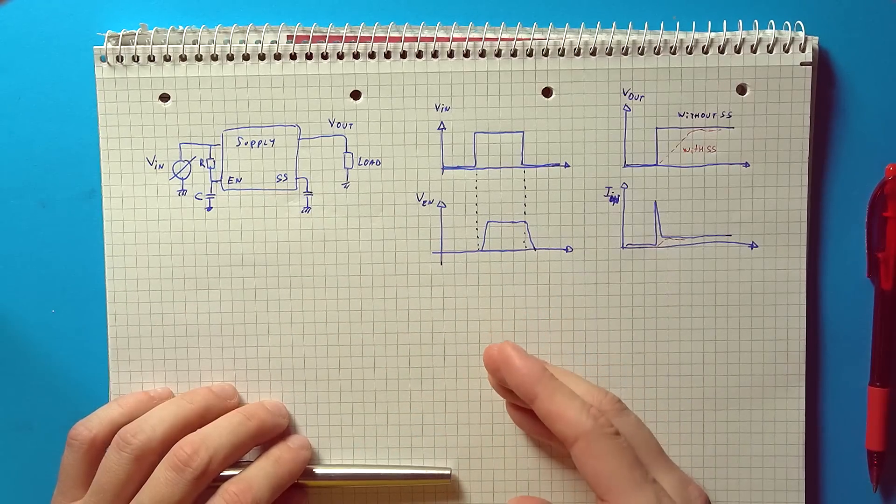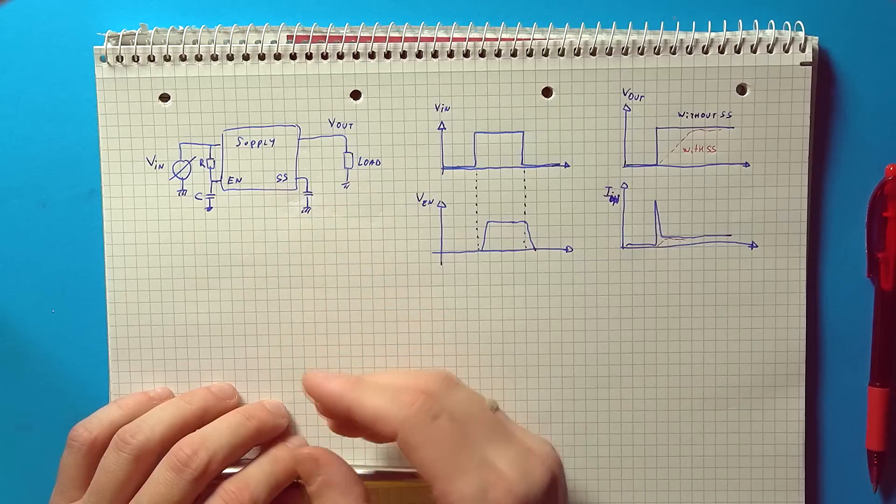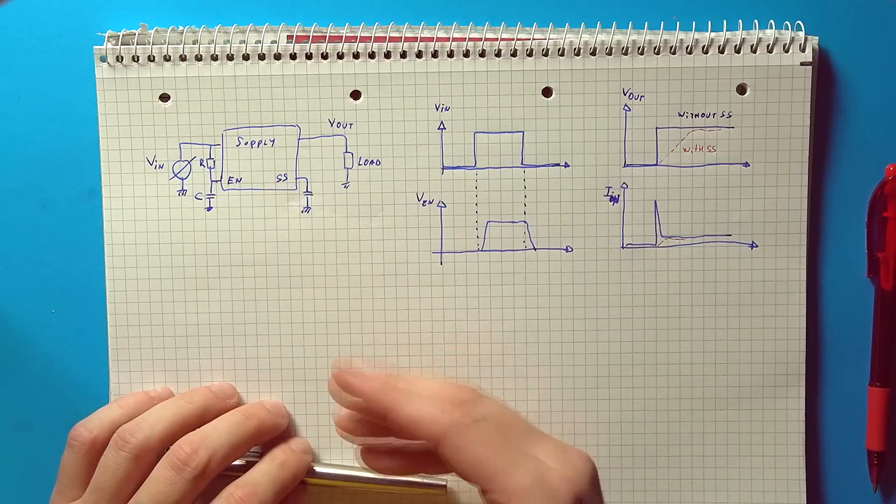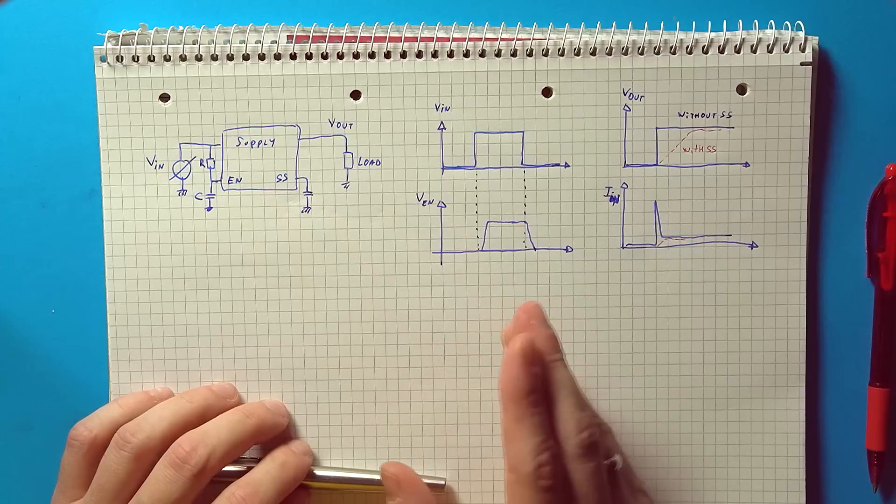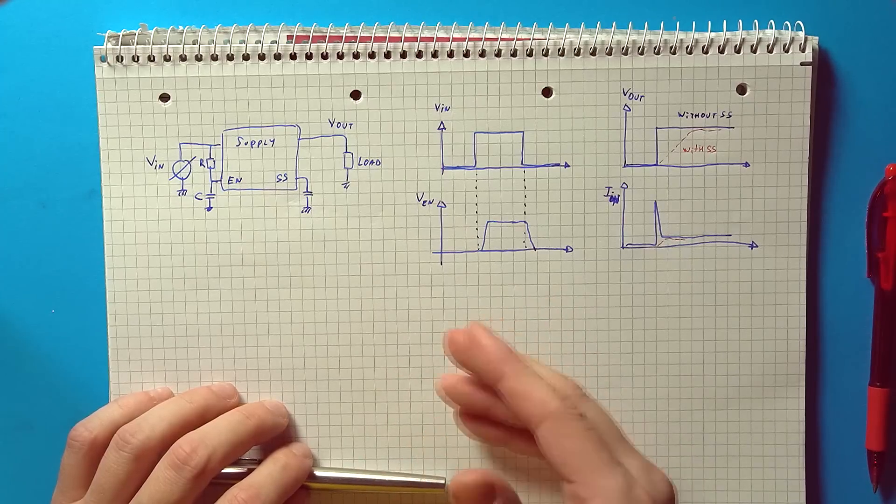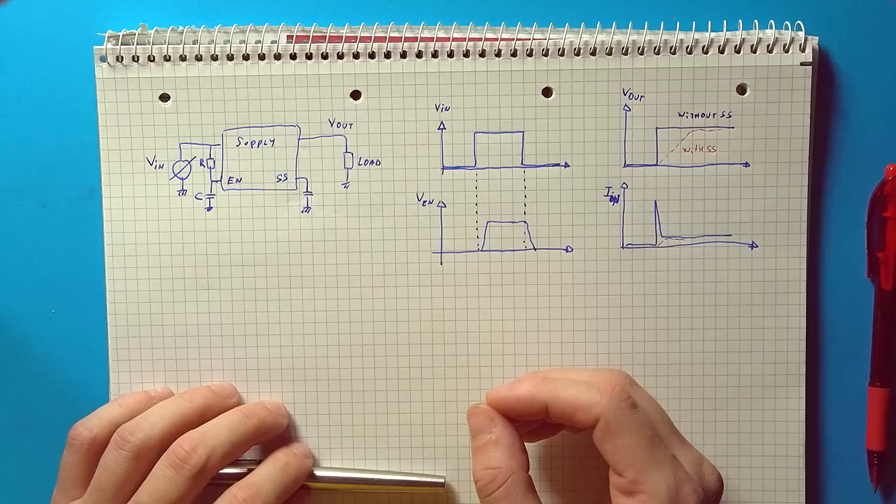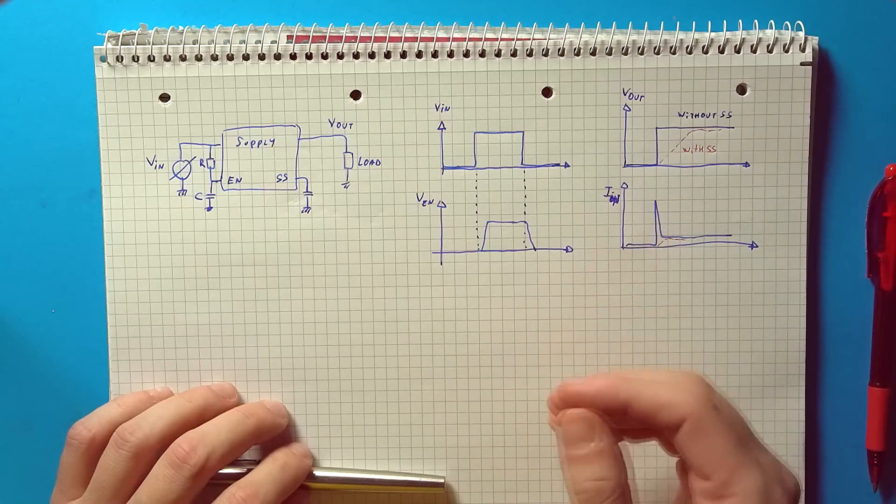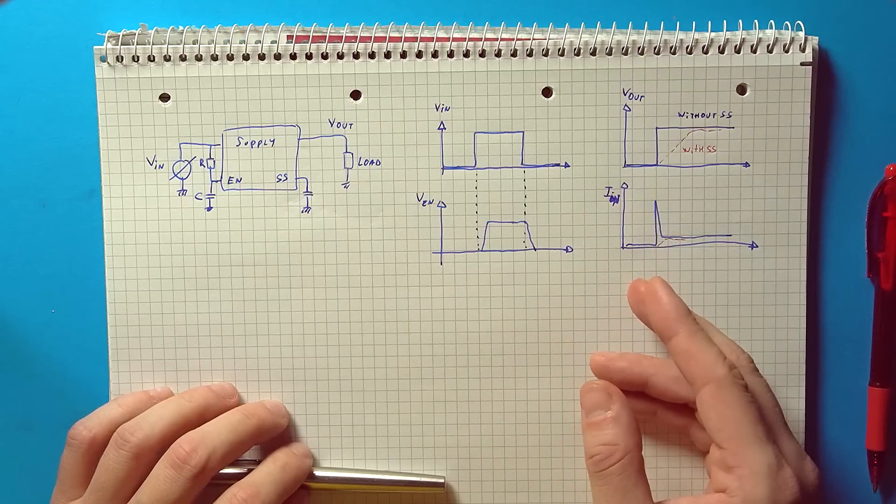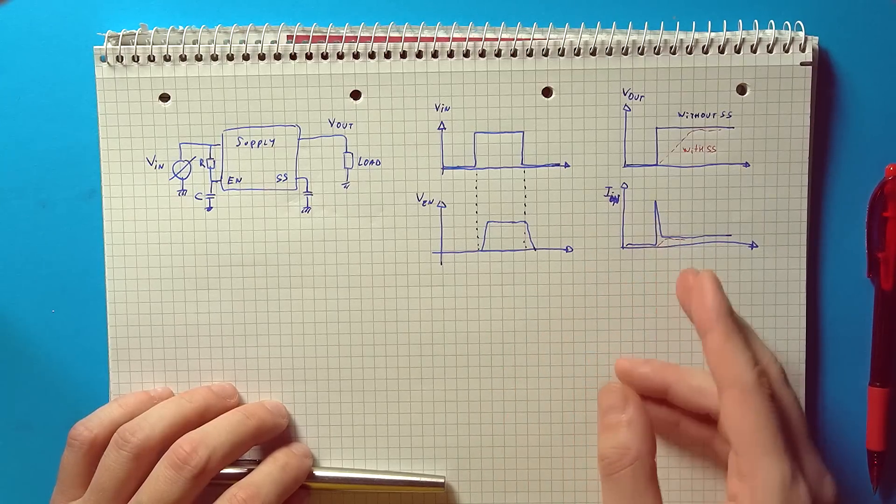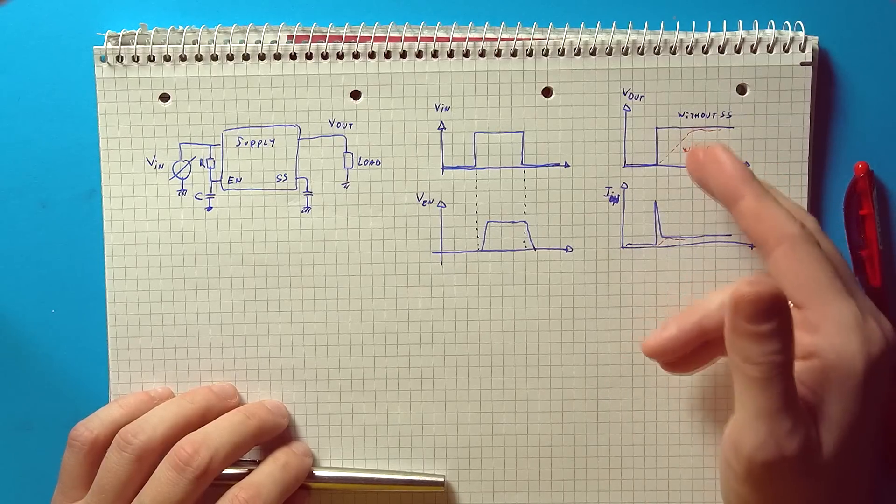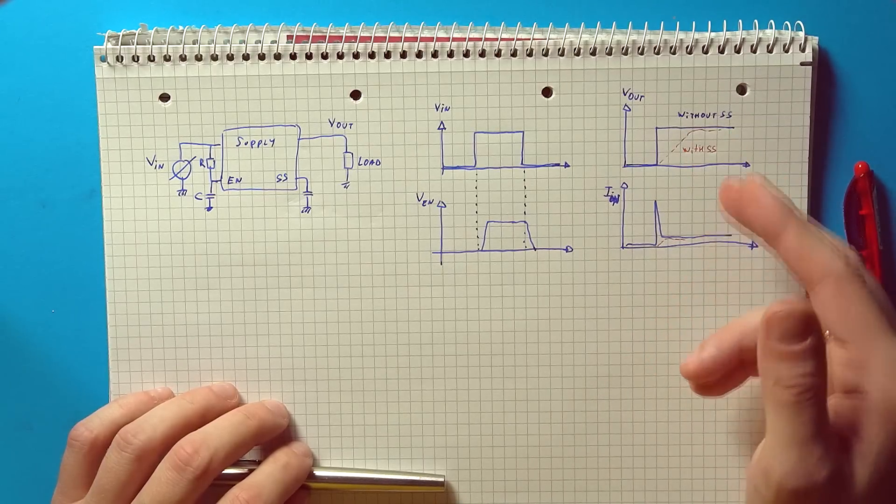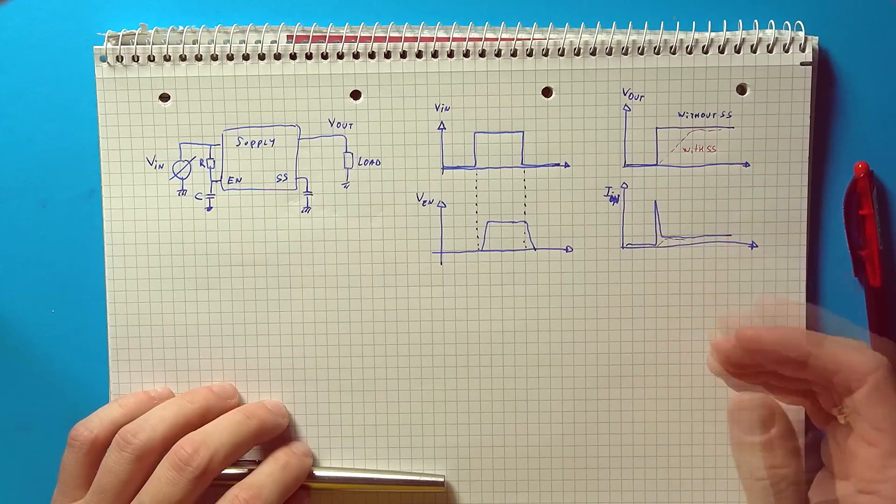Another feature which exists in some supplies is the existence of a soft start. So a built-in slow turn on circuit which forces the output to only slowly increase during a turn on event. Thus giving more time for the supply to react and at the same time draw smaller inrush currents. So if this soft start exists you will probably not have any sort of output overshoots or input inrush currents.